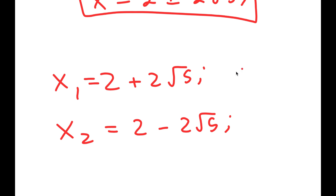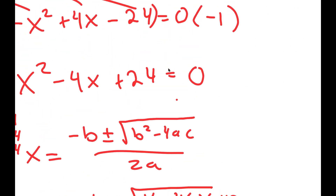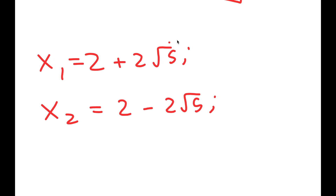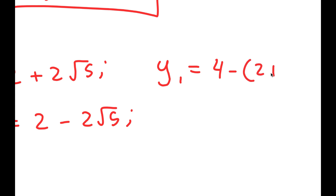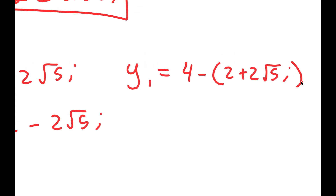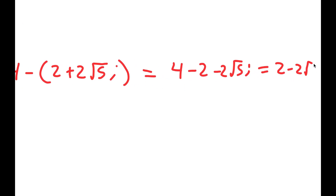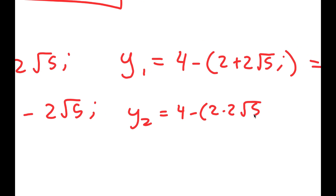For each solution of x I need a corresponding solution of y, since we're solving for the pair (x, y). Recall that y is equal to 4 minus x. So y1 is equal to 4 minus (2 plus 2 root 5i), which gives 2 minus 2 root 5i. And y2 is equal to 4 minus (2 minus 2 root 5i), which gives 2 plus 2 root 5i.